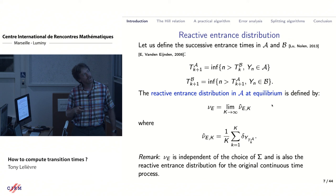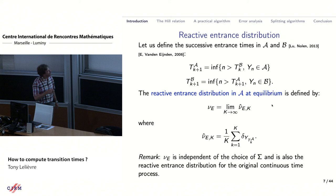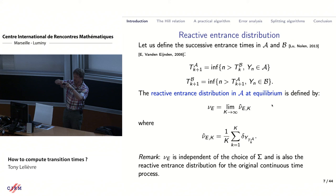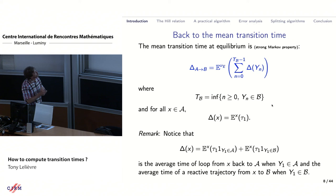You look at the successive entry points in A coming from B: your process goes into B, back into A, into B, back into A, and so on. Taking all these points and making an ergodic average as K goes to infinity defines what is called the reactive entrance distribution in A at equilibrium — nu_e. Starting from this distribution, the question is: how long does it take to go to B?